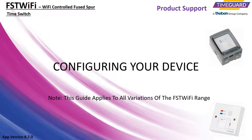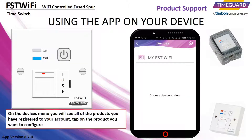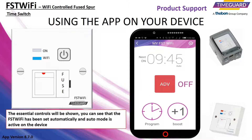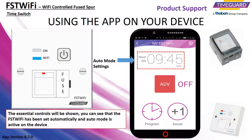Configuring your FST Wi-Fi device: on the devices menu, you will see all of the products you have registered to your account. Tap on the product you want to configure. You will see the default screen for controlling the essentials of the device. You can see that the next on time is set to 9:45 am, and the FST Wi-Fi has also been set to auto mode.